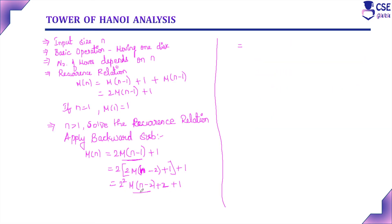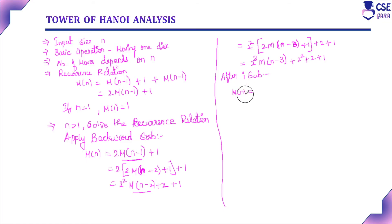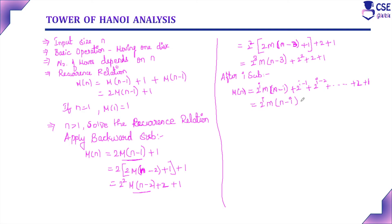For M(N-2), again we apply backward substitution: 2·M(N-3) + 1, giving us 2³·M(N-3) + 2² + 2 + 1. After I substitutions, we get the recurrence relation as M(N) = 2^I · M(N-I) + 2^(I-1) + 2^(I-2) + ... + 2 + 1, which simplifies to 2^I · M(N-I) + 2^I - 1. Since the initial condition is M(1) = 1, we consider I = N-1.